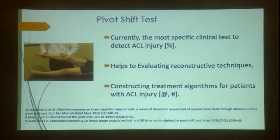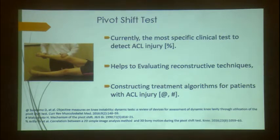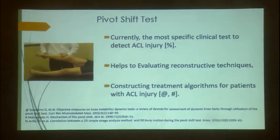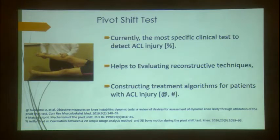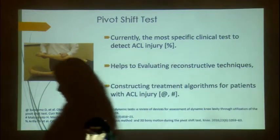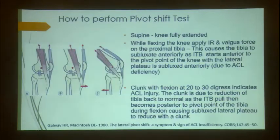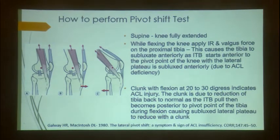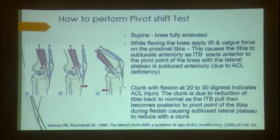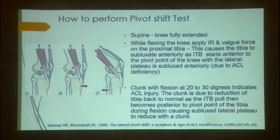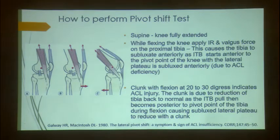To test pivot shift or rotational instability in ACL, apart from the anterior drawer test and Lackmann's test, the Slocum's test is also very important. The pivot shift test is currently the most specific clinical test to detect ACL injuries. It helps evaluate reconstructive techniques and guide treatment algorithms. Juniors should not be scared of this test — you can do it in clinic once you have patient confidence and sufficient practice, starting under anesthesia first.